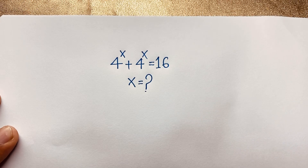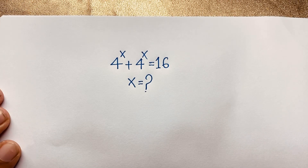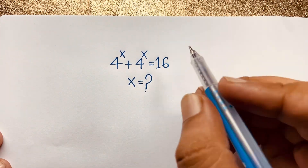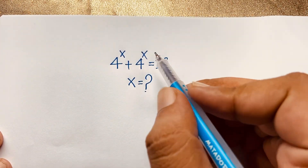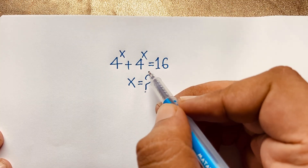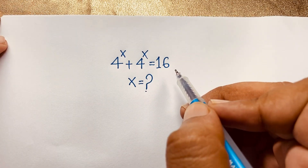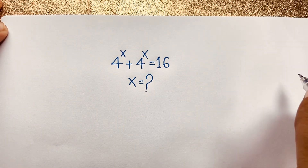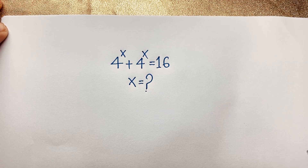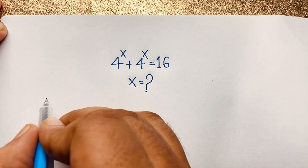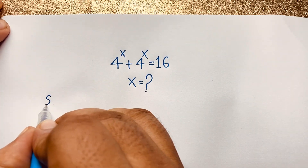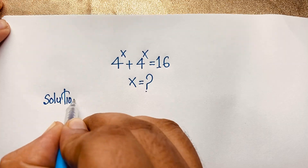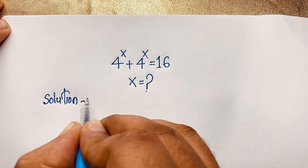Hello everyone, welcome to Russia's Classroom. Today we have solved an easy math problem: 4 to the power x plus 4 to the power x is equal to 16. What is x? I will solve this interesting math question using two methods. This is Solution 1.